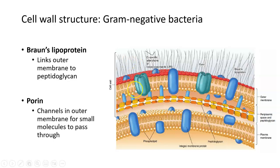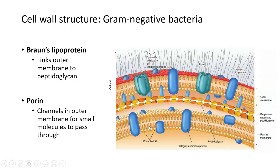There are also some important molecules called porins on the outside of the outer membrane. Porins are basically pores or holes — they act as channels in the outer membrane, allowing stuff to pass through from the outside environment through the porin and ultimately get into the bacterial cell.